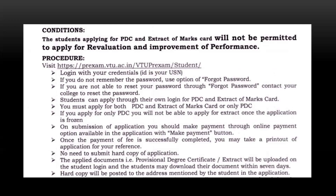The procedure is you have to apply through the PR Exam V2 login. You have to login with your credentials where your USN is your ID. If you don't remember your password, you can use the forgot password option to reset it. If you're not able to do it, you can contact your college to reset the password. You have to apply through your own login for the Provisional Degree Certificate and the Extract of Marks Card.